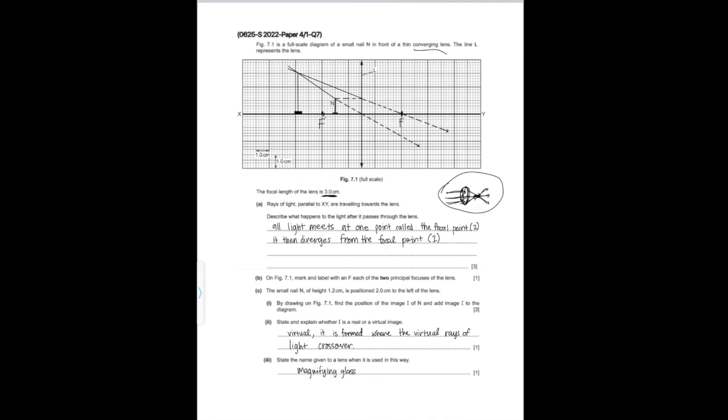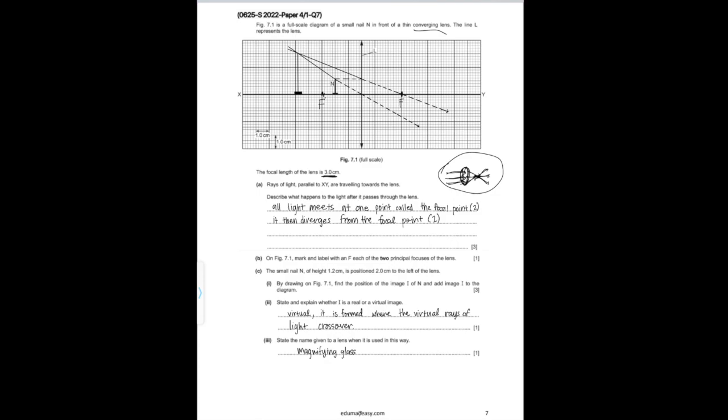Part C states: a small nail N of height 1.2 cm is positioned 2 cm to the left of the lens. Part I says by drawing on Figure 7.1, find the position of image I of N. You should have learned how to do ray diagrams through converging and diverging lenses — for objects behind, in front of, or on the focal point. In this case, the object is in front of the focal point going through a converging lens.